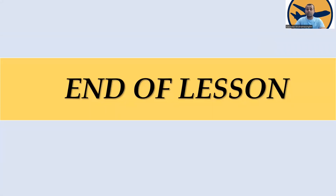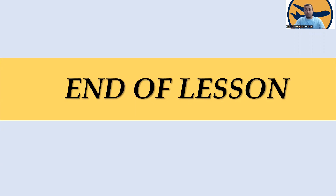That is the end of this lesson. I think you now have a good knowledge about ATA Chapter 27 system controls and indicating. If you are watching for the first time, please watch the previous lessons — lesson one and lesson two — to get a complete understanding of ATA Chapter 27. I will upload more lessons as soon as possible.